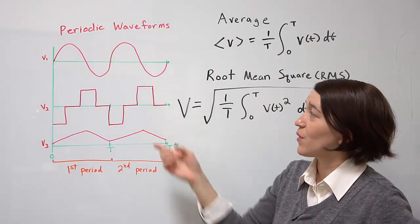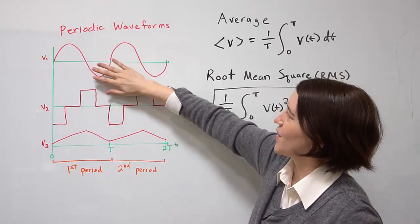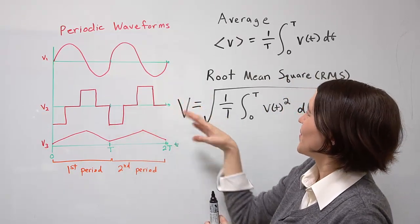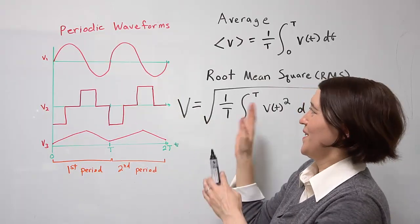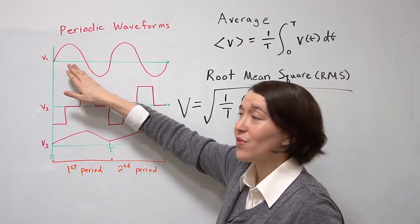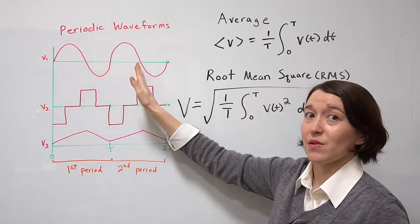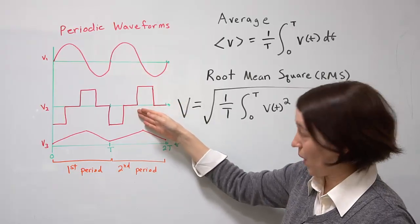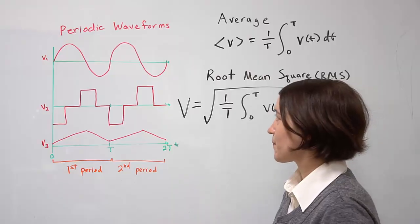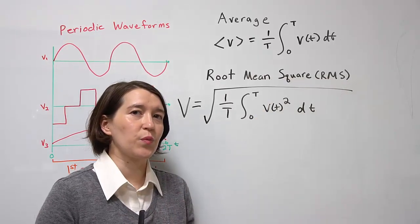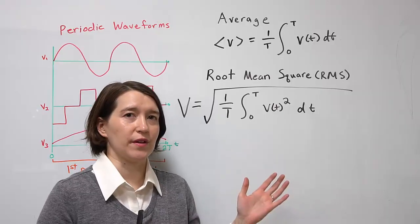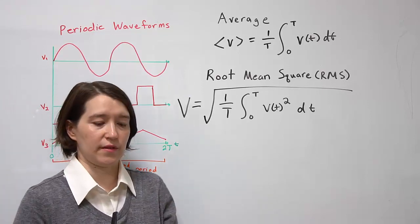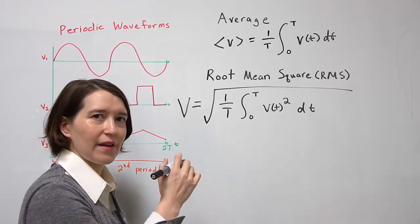If we go back and look at these waveforms, essentially what you're doing is squaring them, so all the negatives will become positive. Then you take the average of that and take the square root. So the RMS value of this sinusoidal waveform will not be zero — the average is zero, but the RMS value will be positive. Same for the others. You can think of the RMS value as the equivalent voltage if you put this waveform over a resistor.